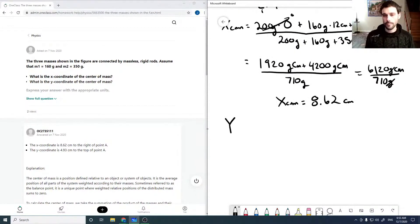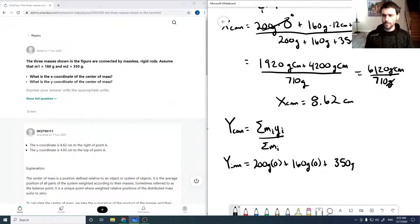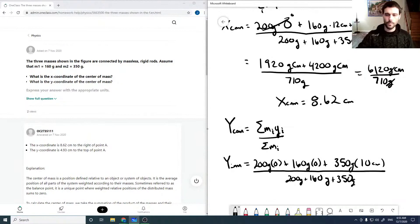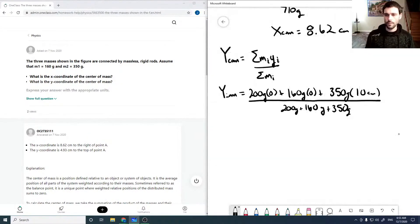And so we have a similar equation for y center of mass. It's just going to be the sum over all the masses times the y coordinates over the sum of all the masses. So our y center of mass is just going to be 200 grams times 0 plus 160 grams times 0 plus 350 grams times 10 centimeters, all over 200 grams plus 160 grams plus 350.